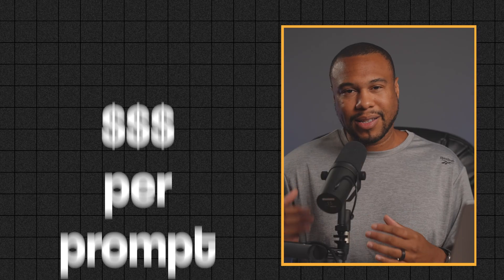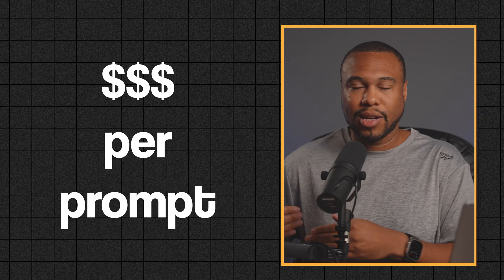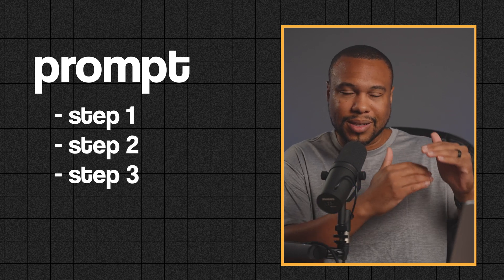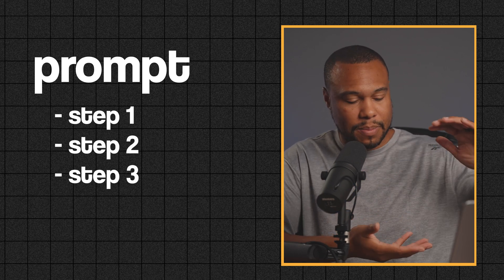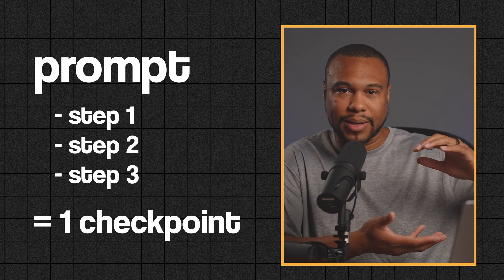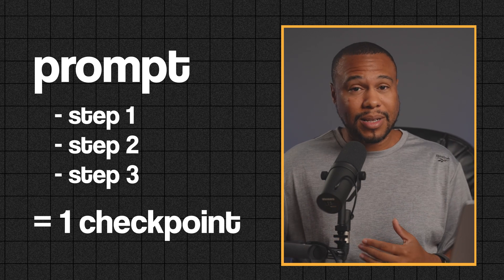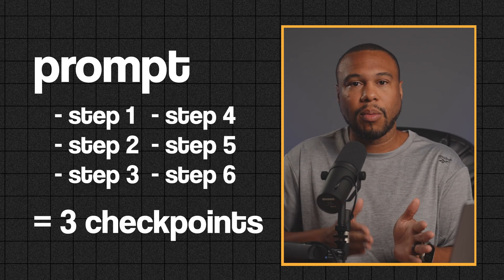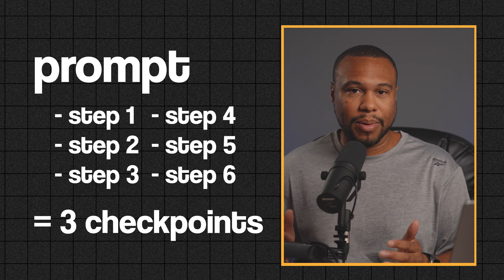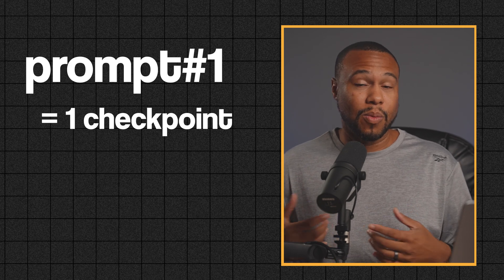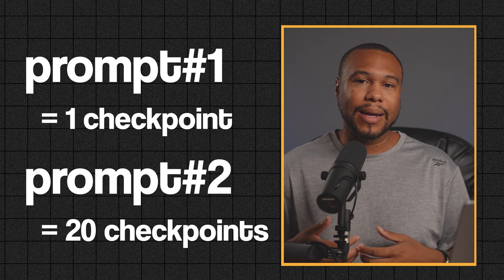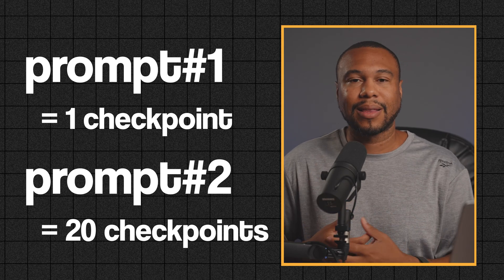They call these credits checkpoints. Instead of charging per prompt, they charge per checkpoint. If your prompt requires multiple steps, those steps can be combined into one checkpoint. But if a prompt is too complicated, they will split the request into multiple checkpoints. So one prompt could be one checkpoint, or one prompt could be 20 checkpoints — it really depends on what's inside the prompt.